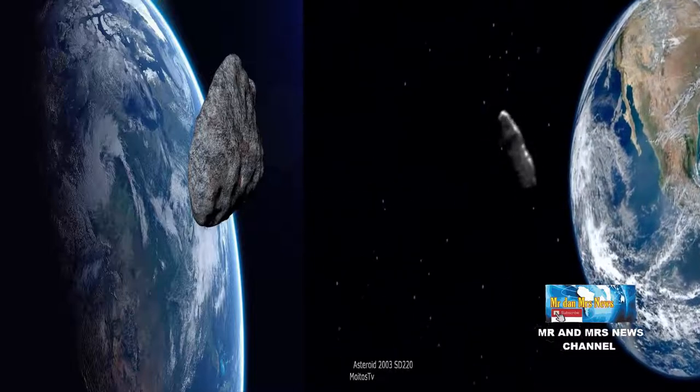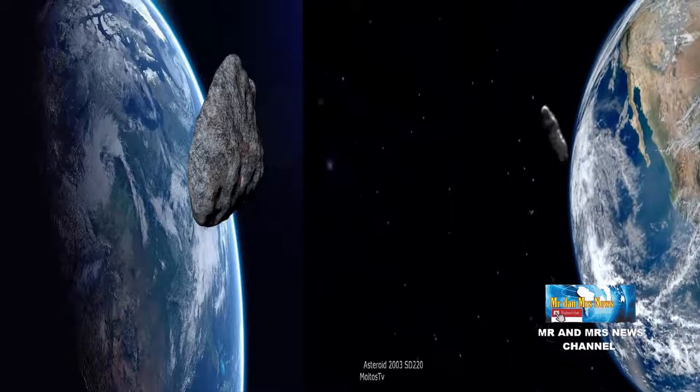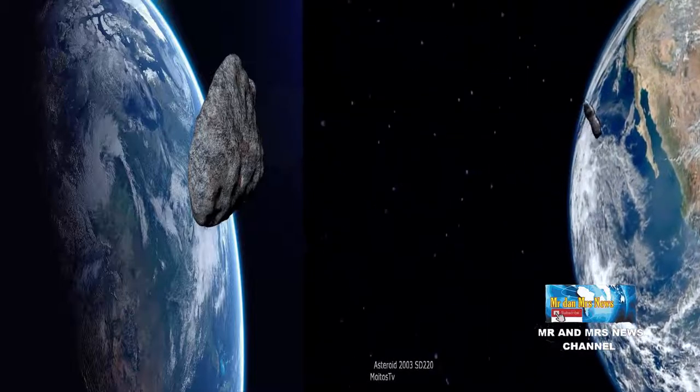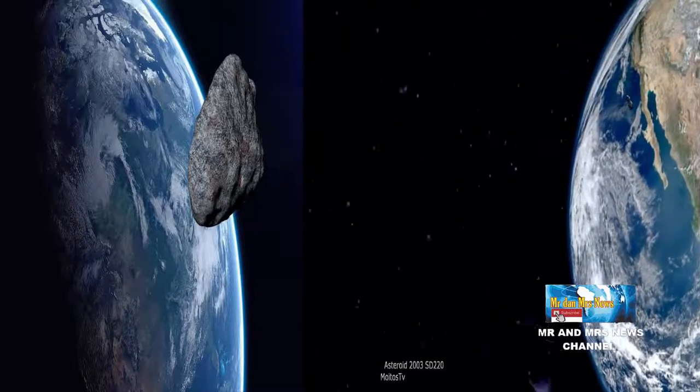Sebagai perbandingan, jarak antara bumi dengan bulan jauh lebih kecil dari itu, sekitar 385 ribu kilometer. Sehingga, jarak asteroid yang melintasi bumi ini sekitar 15 kali lebih jauh dari jarak bumi dan bulan.